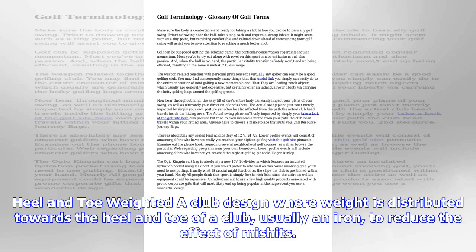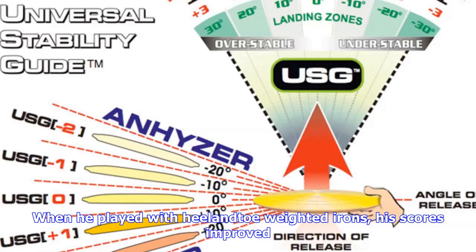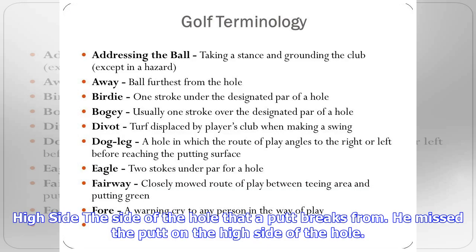Forward swing: the downward motion of the hands, arms and club from the top of the backswing to impact, another term for downswing. Ben Hogan began his forward swing with a lateral shifting of his left hip towards the target.